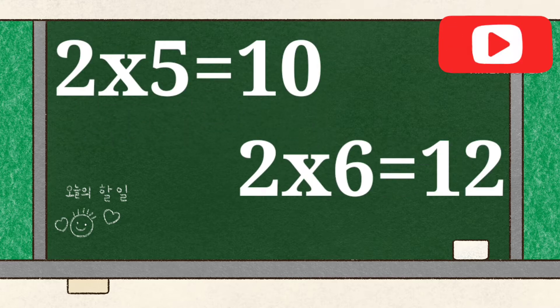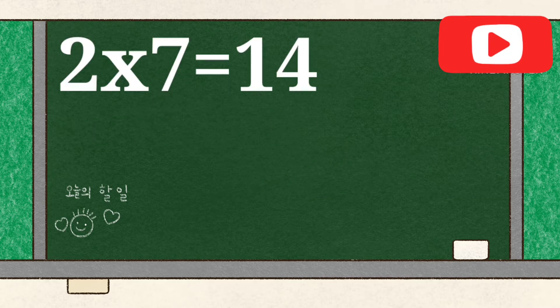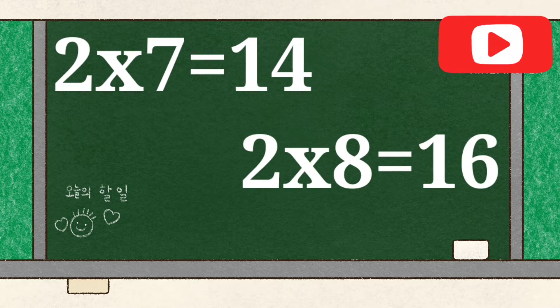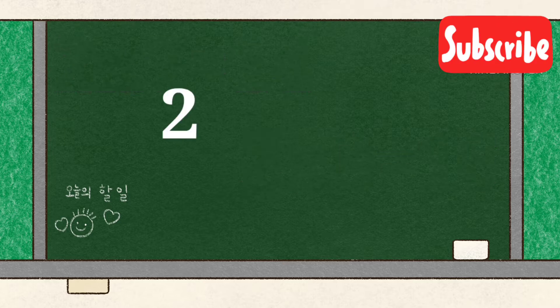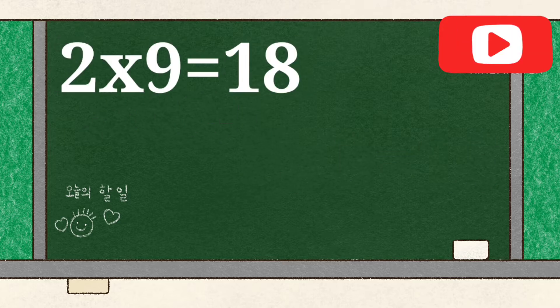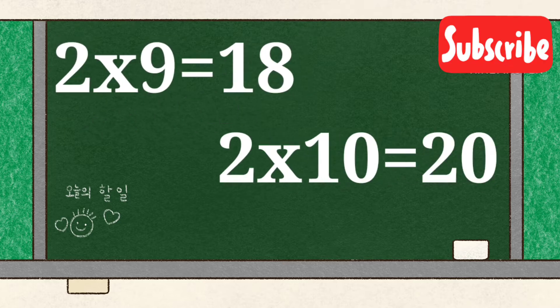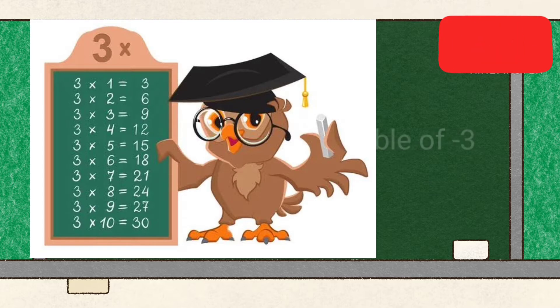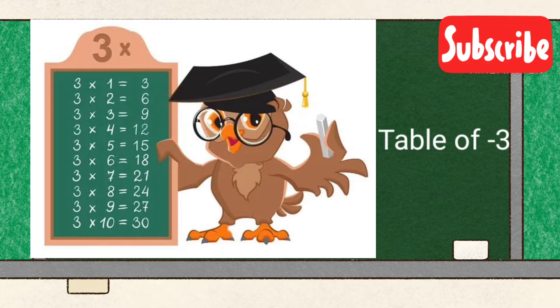2 6's are 12, 2 7's are 14, 2 8's are 16, 2 9's are 18, 2 10's are 20. Table of 3.